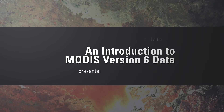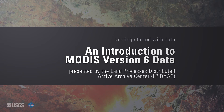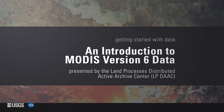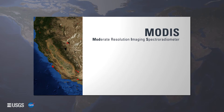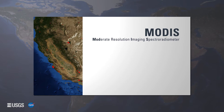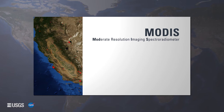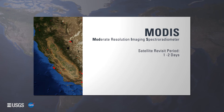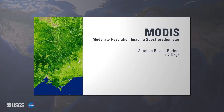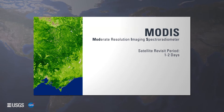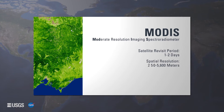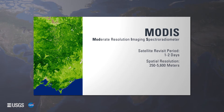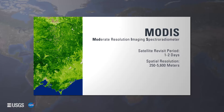An introduction to MODIS Version 6 data, presented by the Land Processes Distributed Active Archive Center, LPDAAC. The Moderate Resolution Imaging Spectroradiometer, or MODIS, instrument operates on both NASA's Terra and Aqua spacecraft. The orbit of each spacecraft allows MODIS to capture the entire Earth every one to two days, providing data products with spatial resolution ranging from 250 to 5,600 meters.